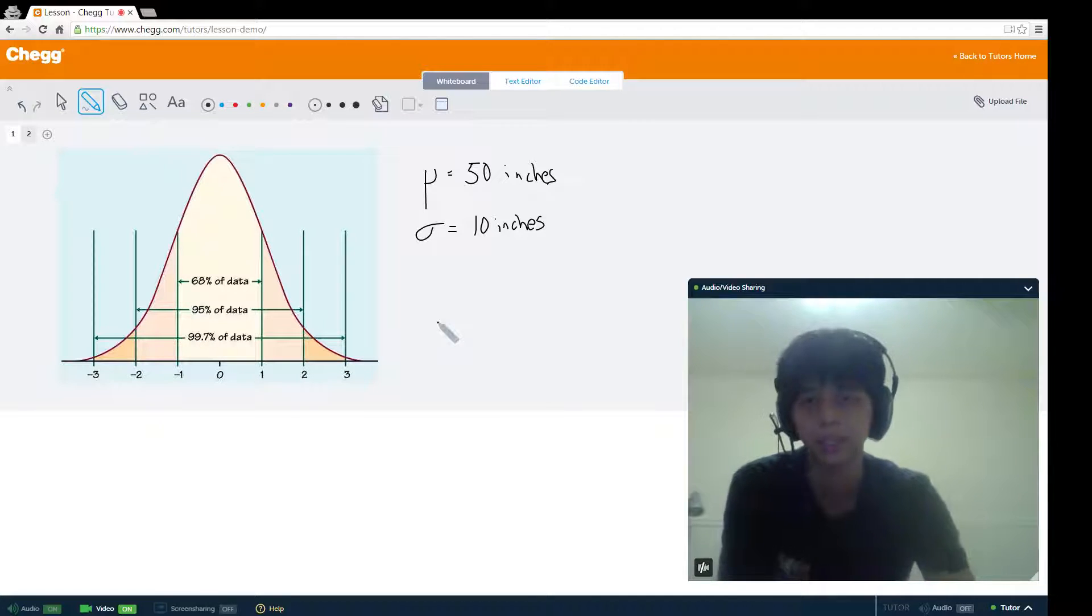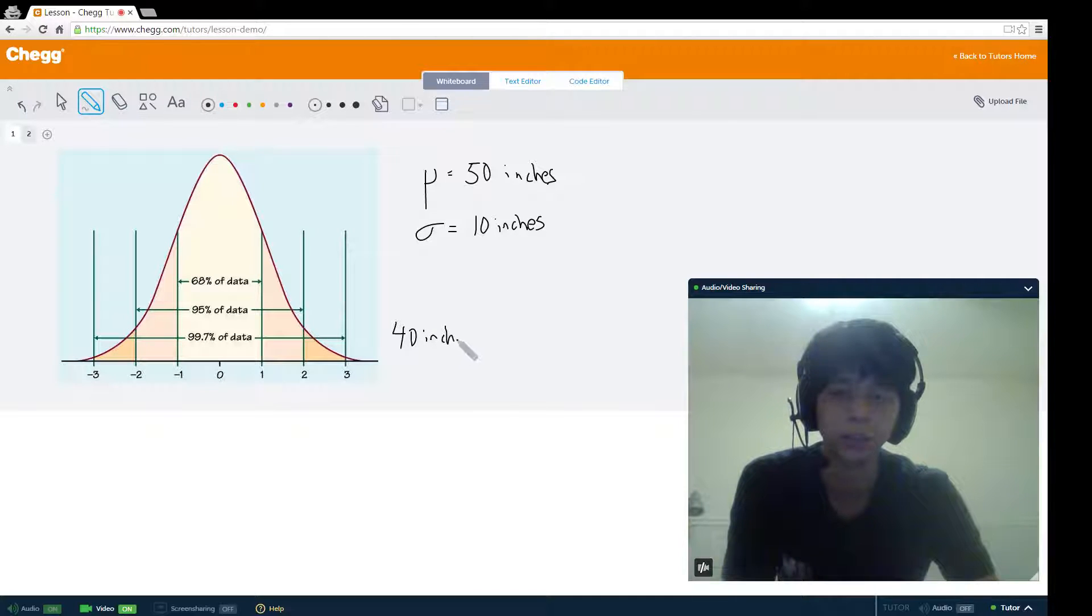The first is, let's say I tell you that we observe one plant that is 40 inches, and I want you to calculate the z-score. Well, once again, this is pretty simple. We just use the formula.